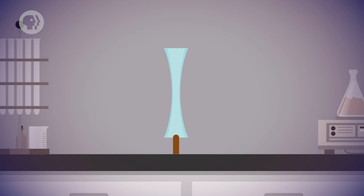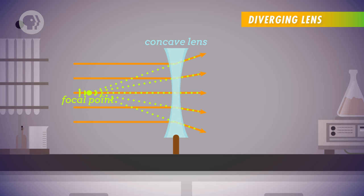Diverging lenses have a concave shape and do the opposite of a converging lens, causing rays of light to diverge away from the lens's axis.